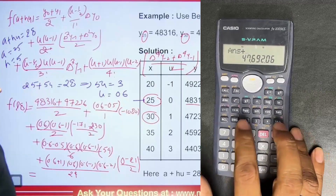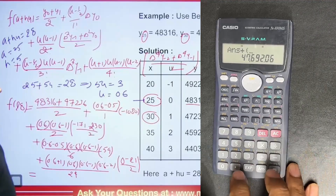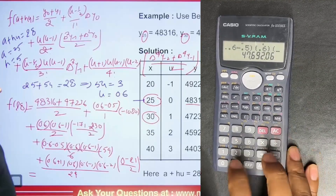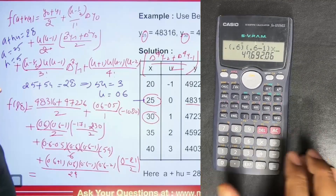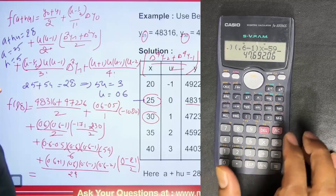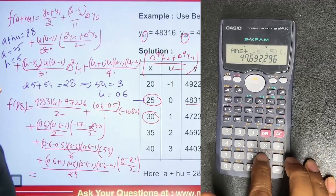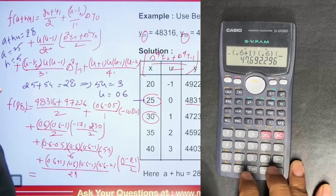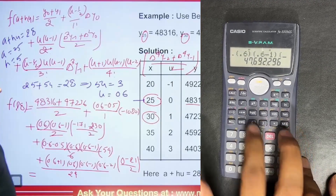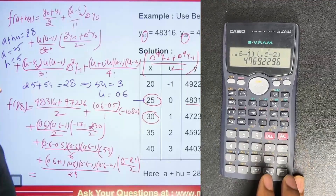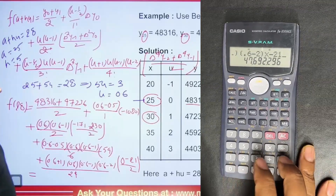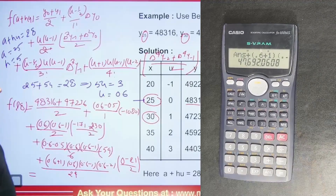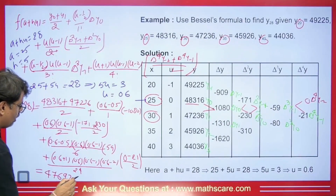Then plus: (0.6 minus 0.5) times 0.6 times (0.6 minus 1), divided by 6, times minus 59. Then plus: (0.6 + 1) times 0.6 times (0.6 minus 1) times (0.6 minus 2), divided by 24 times 2 — that is divided by 48 — times minus 21. So the answer we get is 47692.06. This will be our answer.